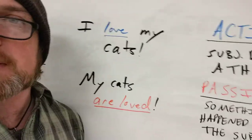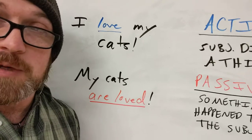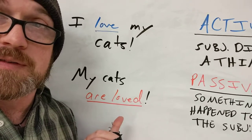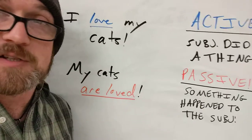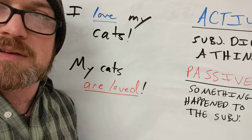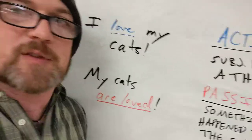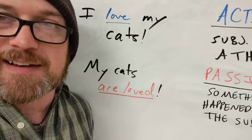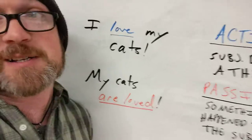Something else you'll notice about the passive: it doesn't tell you who did the thing. In the active sentence we know — 'I love my cats,' I did it. But the passive just says 'my cats are loved.' It does not tell you that my cats are loved by me or by somebody else. It doesn't tell you who did the loving because the subject didn't do the thing. For this reason, the passive is famously used in the classic example 'mistakes were made' — that's what you do when you want to admit to the mistake but not throw anybody under the bus for actually making it.